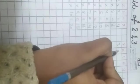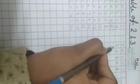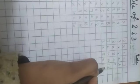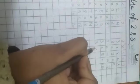3 1's are 3. 3 2's are 6. 3 3's are 9. 3 4's are 12. 3 5's are 15. 3 6's are 18.